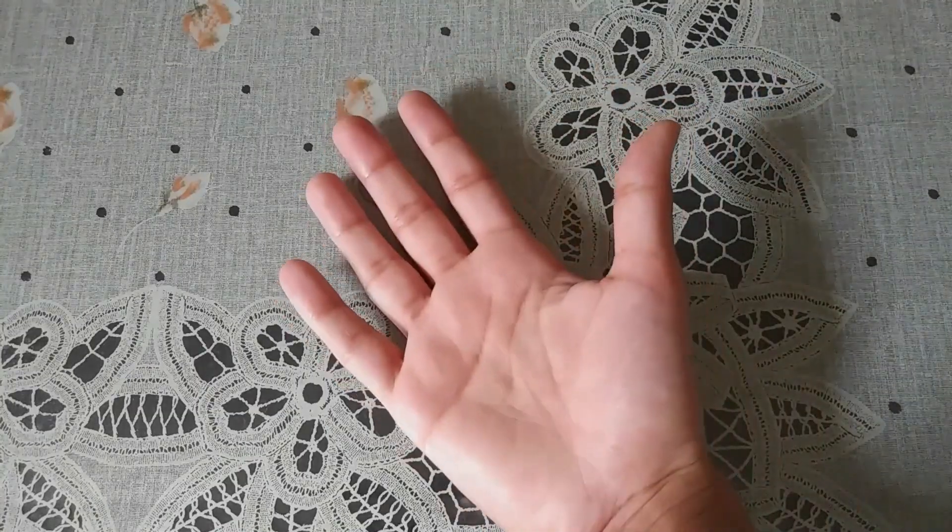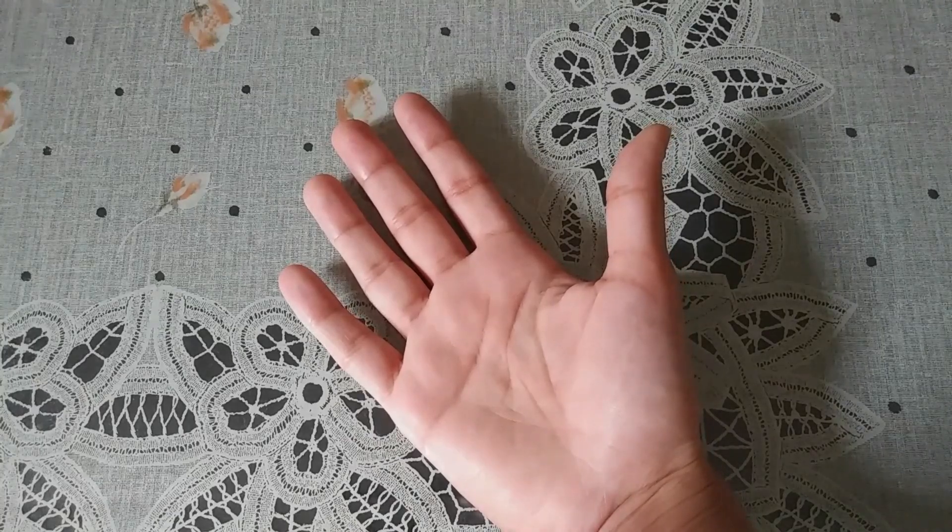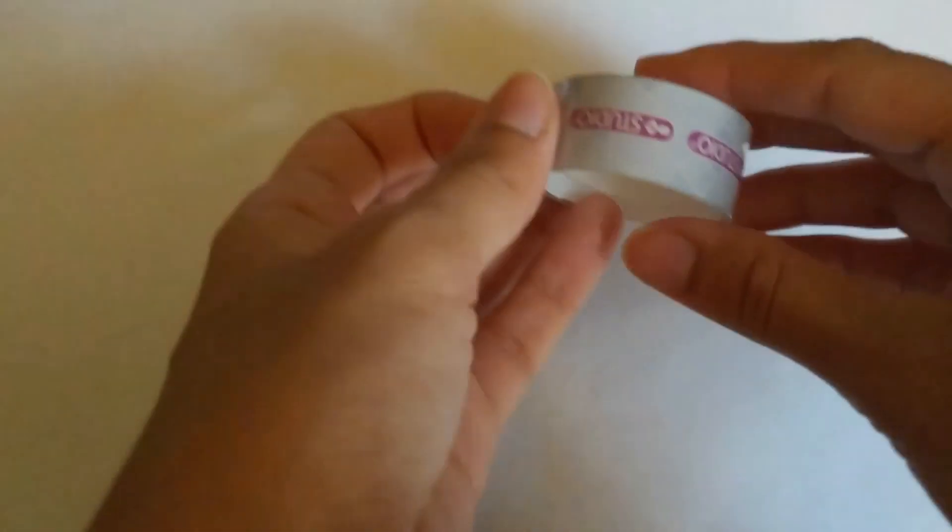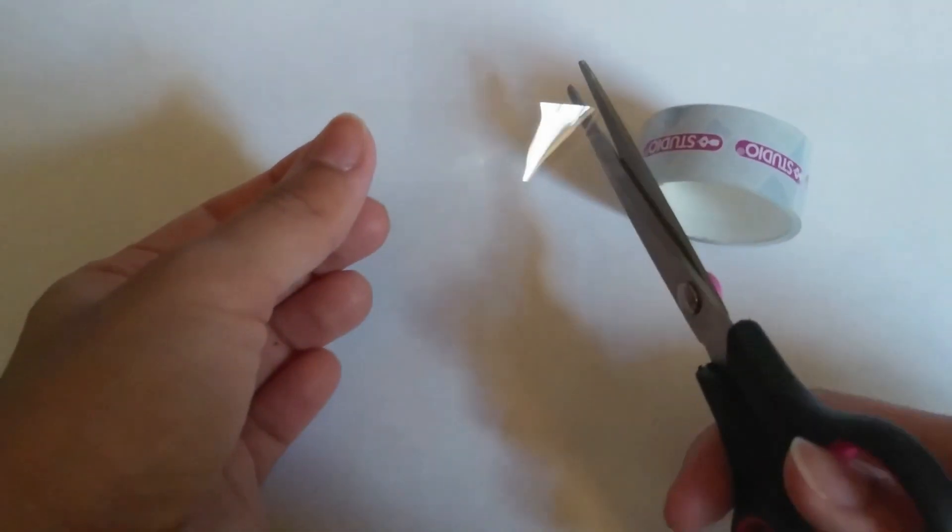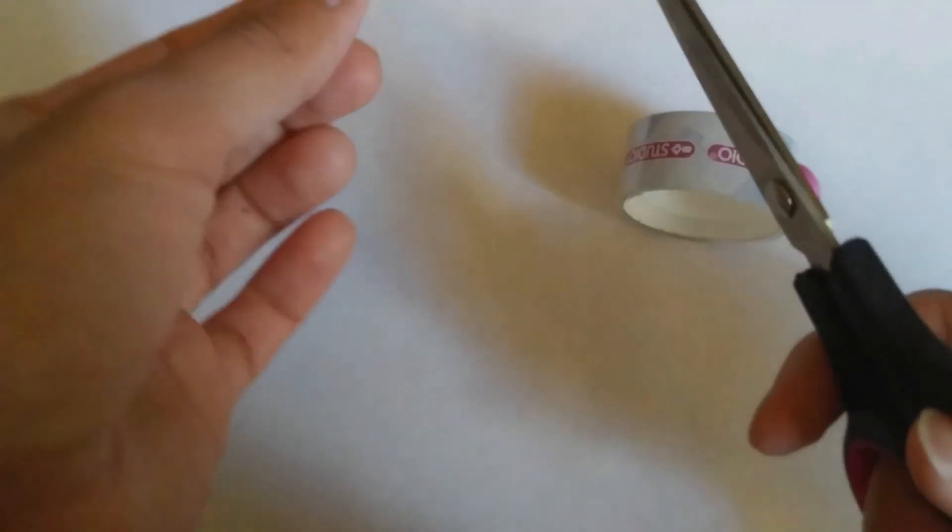Before we begin, we need to ensure our fingers are clear of any marks or debris. Once we know that, we're going to carefully cut out a piece of tape to set aside for later. We want to be careful to not get any marks on the center of the tape by holding it only by the edges.